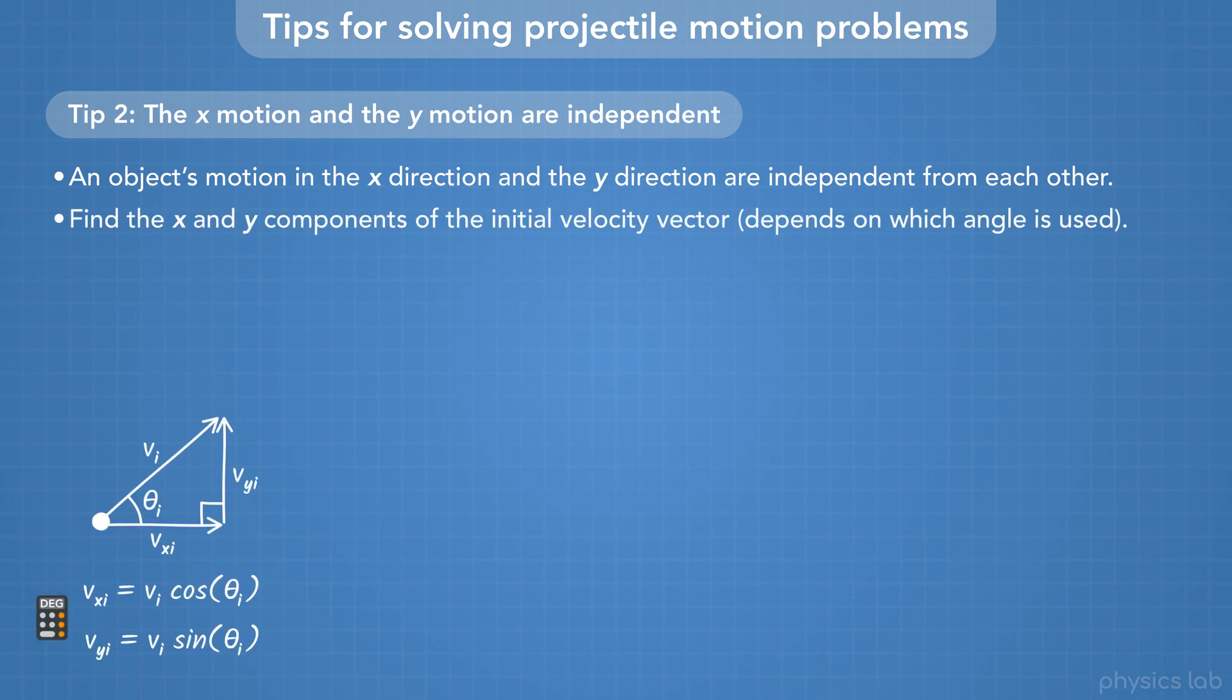If we're given the initial velocity and an angle, we usually need to find the X and Y components of the initial velocity vector, which will be the initial X velocity and the initial Y velocity. Remember that cosine is for the component that's adjacent to the angle, and sine is for the component opposite the angle.